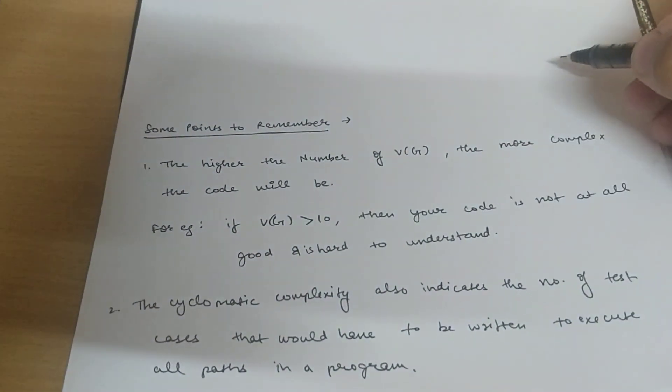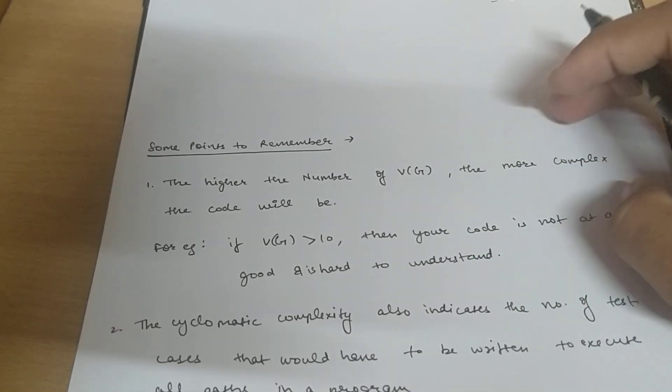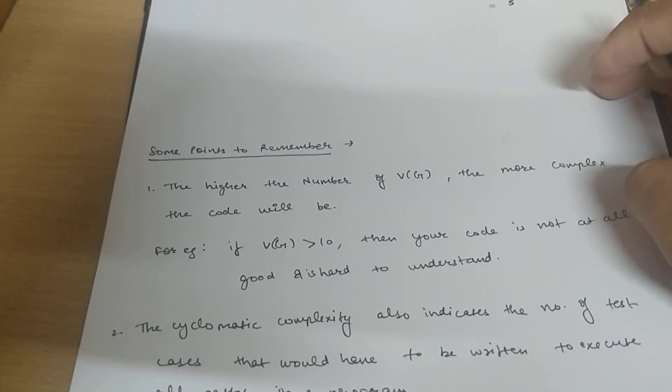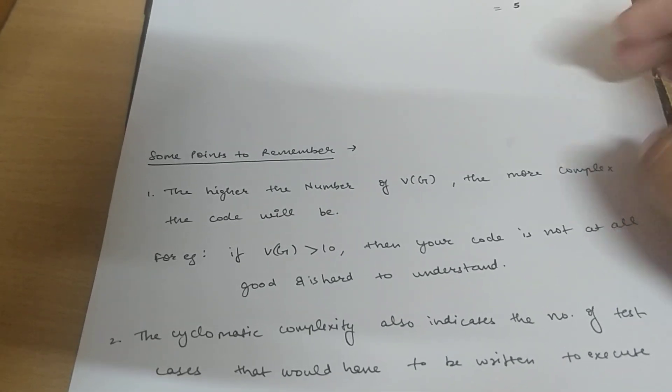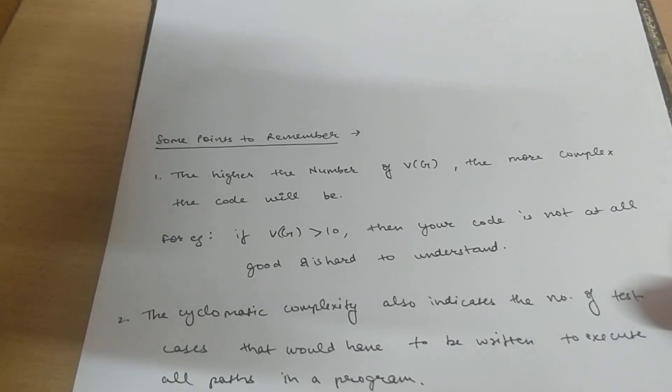So for a better code, to write a better code and an efficient code, you must ensure that the Cyclomatic complexity of that code should be minimum, as minimum as possible. Or you just have to try to eliminate that Cyclomatic complexity.